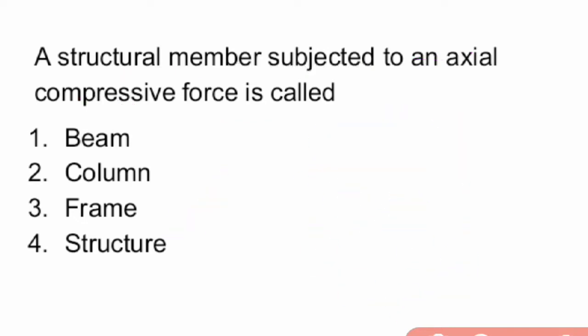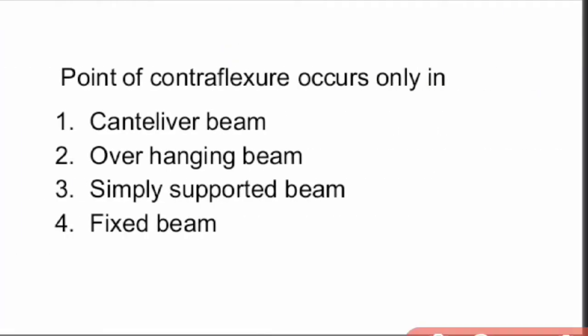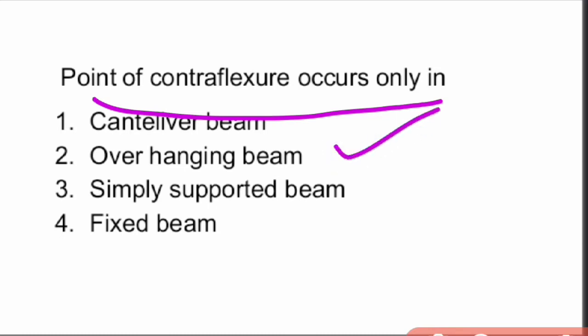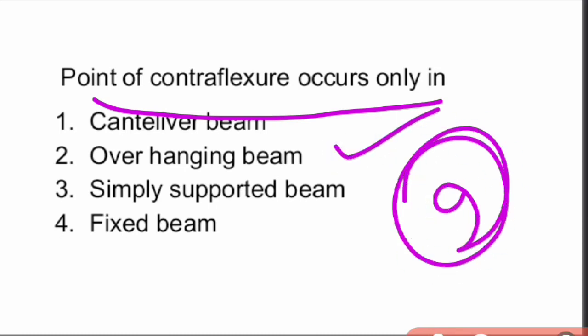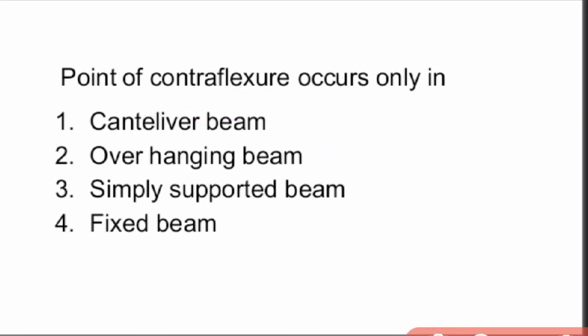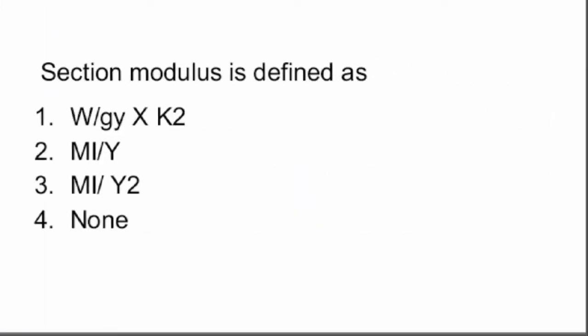Next question: point of contraflexure occurs only in what type of beam? Point of contraflexure occurs only in overhanging beams. That is option 2, the right answer.